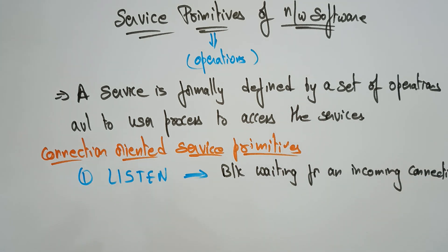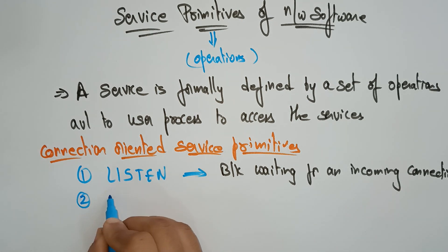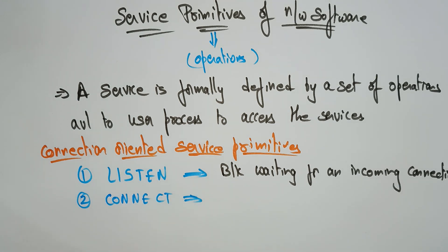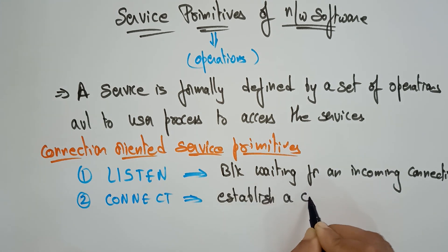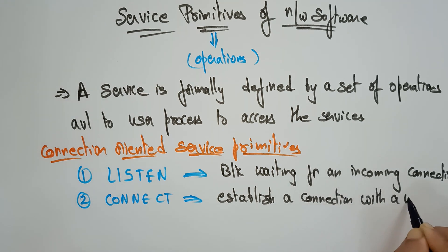Whenever the LISTEN operation is seen on the connection-oriented, the sender or receiver understands that a block is waiting for an incoming connection. The next connection-oriented service primitive is CONNECT. CONNECT means establish a connection with a waiting peer — a peer is nothing but a system. Establish a connection with a waiting peer.